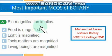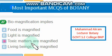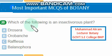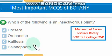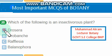Biomagnification implies that toxic matters are magnified — the right option is option C. Among the following, the insectivorous plant is Drosera — the right option is option A. Drosera is an insectivorous plant.